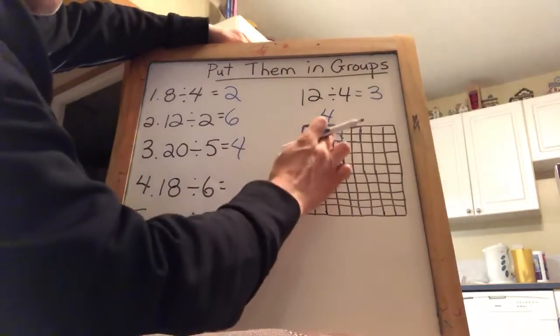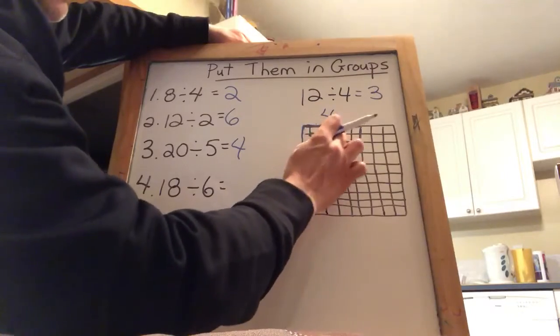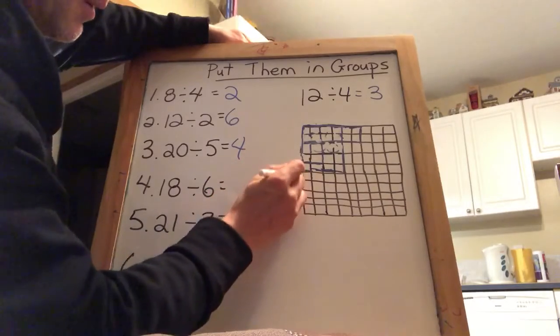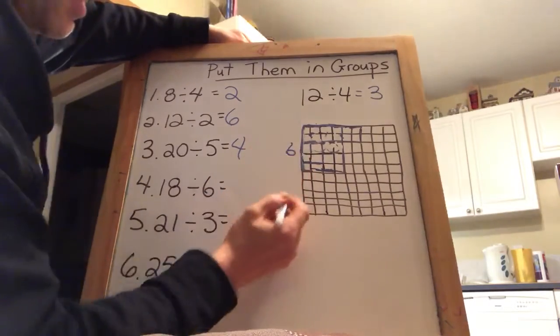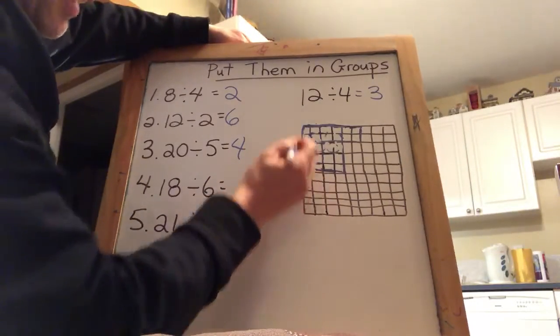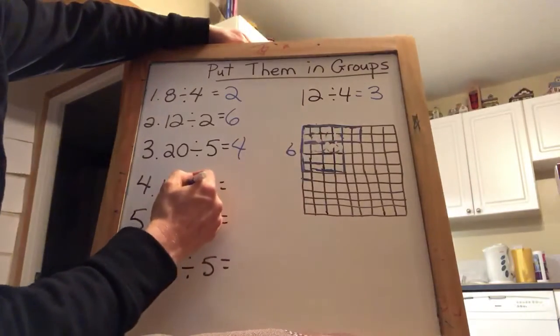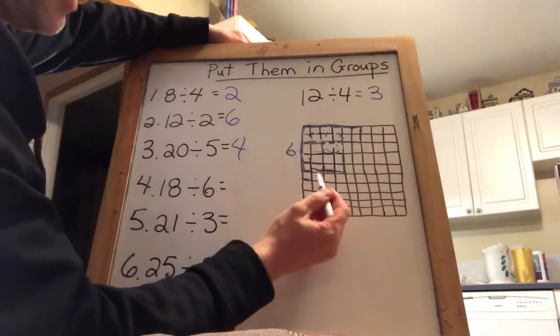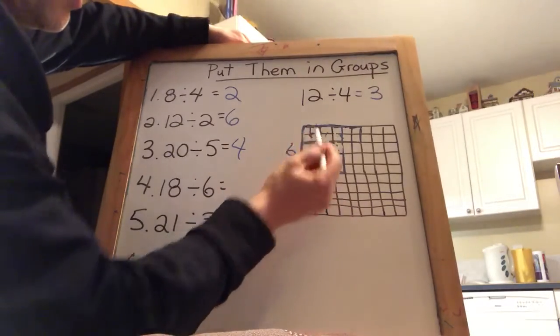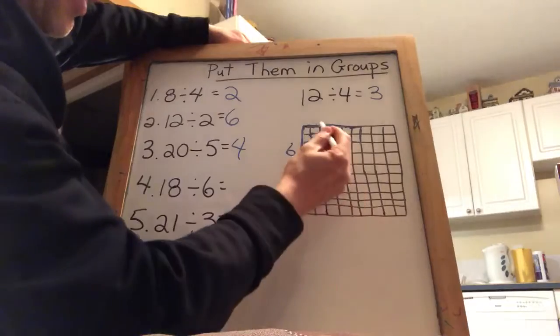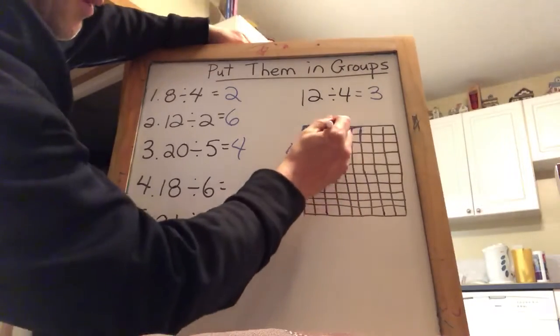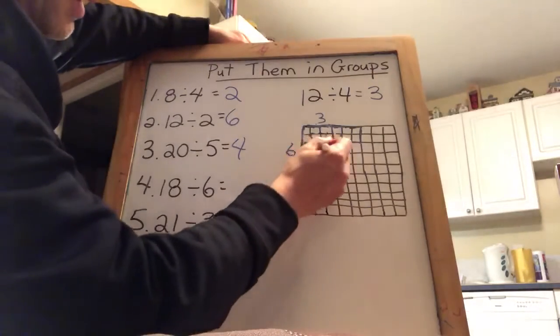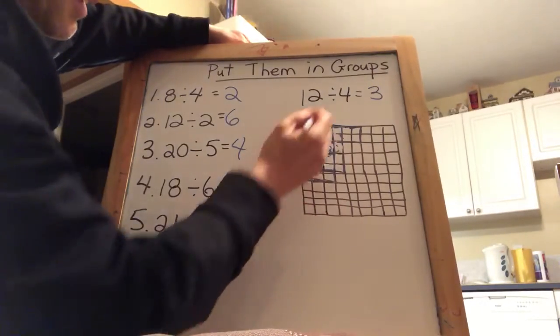18 divided by 6. So this time we're going to have 6 rows. 1, 2, 3, 4, 5, 6. How many 6s do we have to go across to get our 18? So we've got 6 here. If we put another one in each row, that would give us 12. And another one in each row would give us 18. That means we've got 3 in each row to get our 18. So 18 divided by 6 is equal to 3.